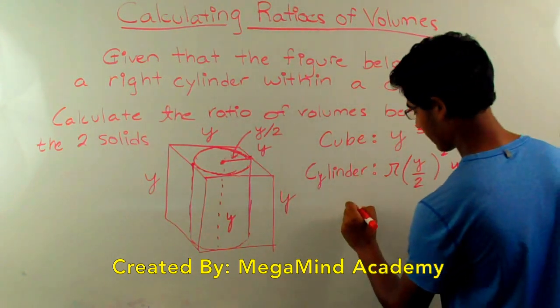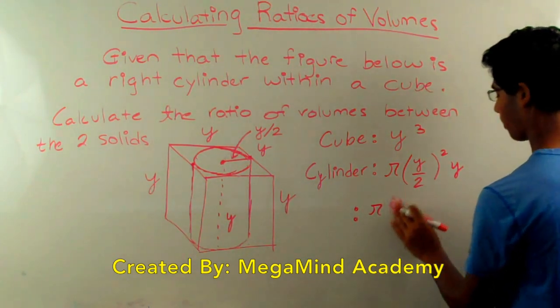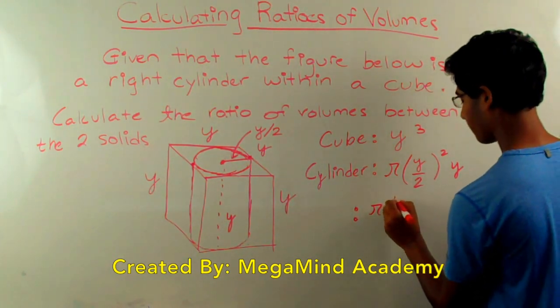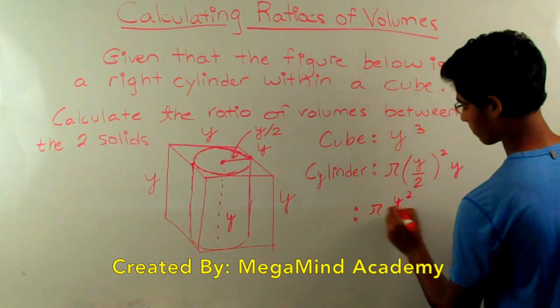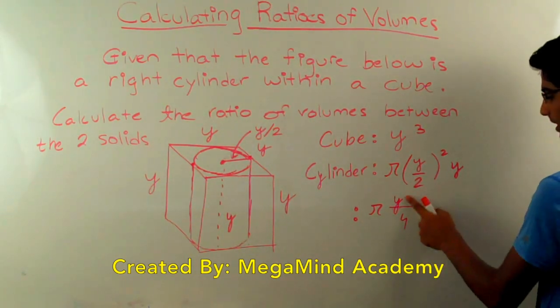This simplifies down to pi times y squared over 4 times y, which just makes this y cubed.